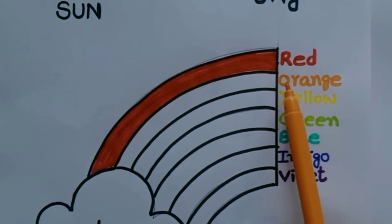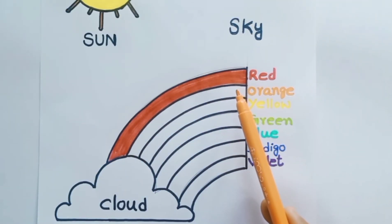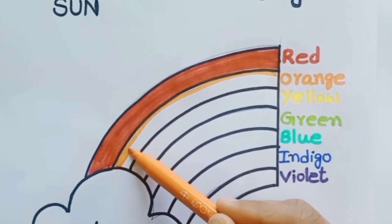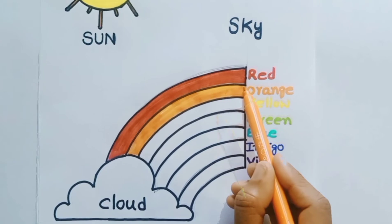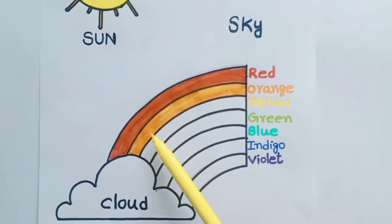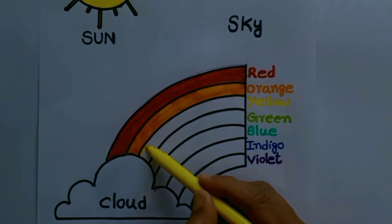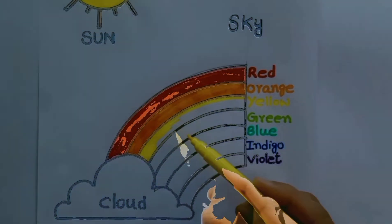Now children, what is the second color of the rainbow? It is orange. Shall we color the second arc in orange? Yes, let us start. The second arc of the rainbow is colored in orange. Now, what is the next color? It is yellow. Let us color the third arc in yellow.